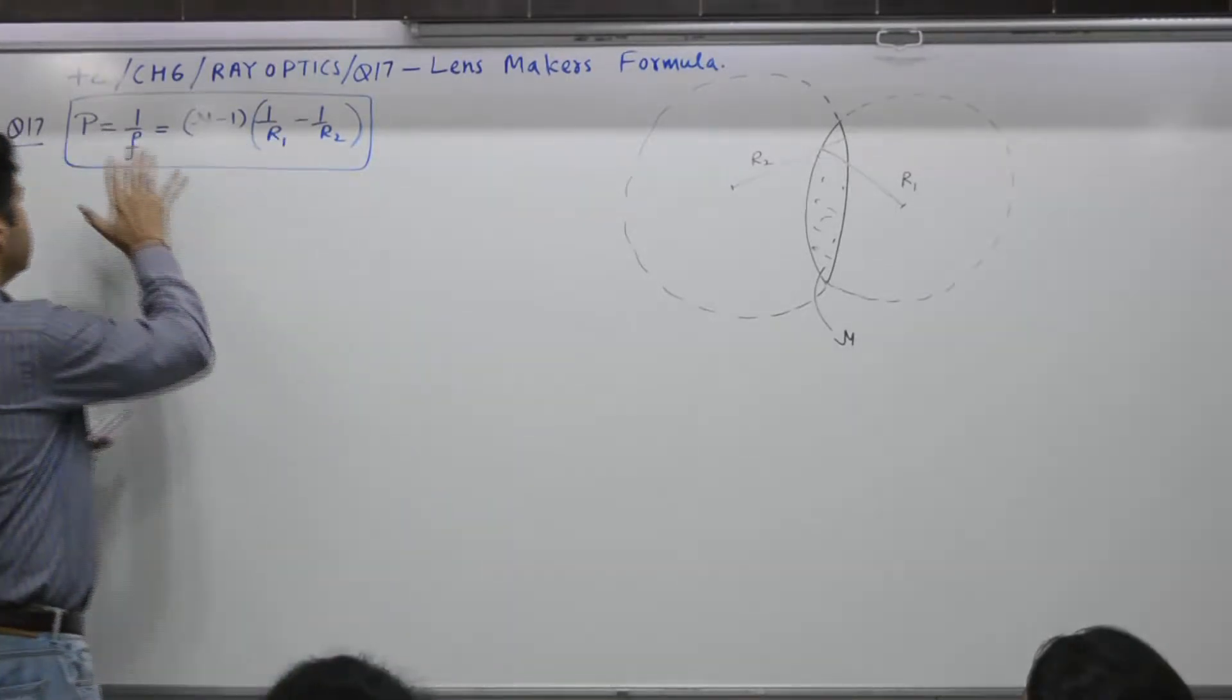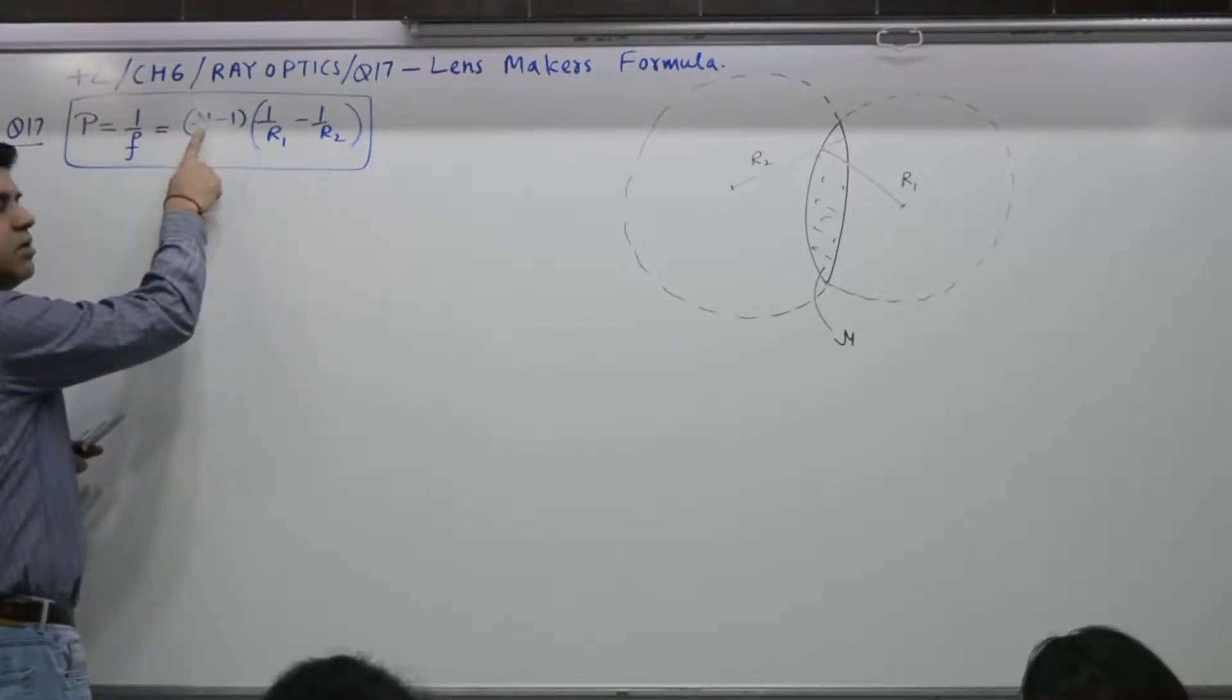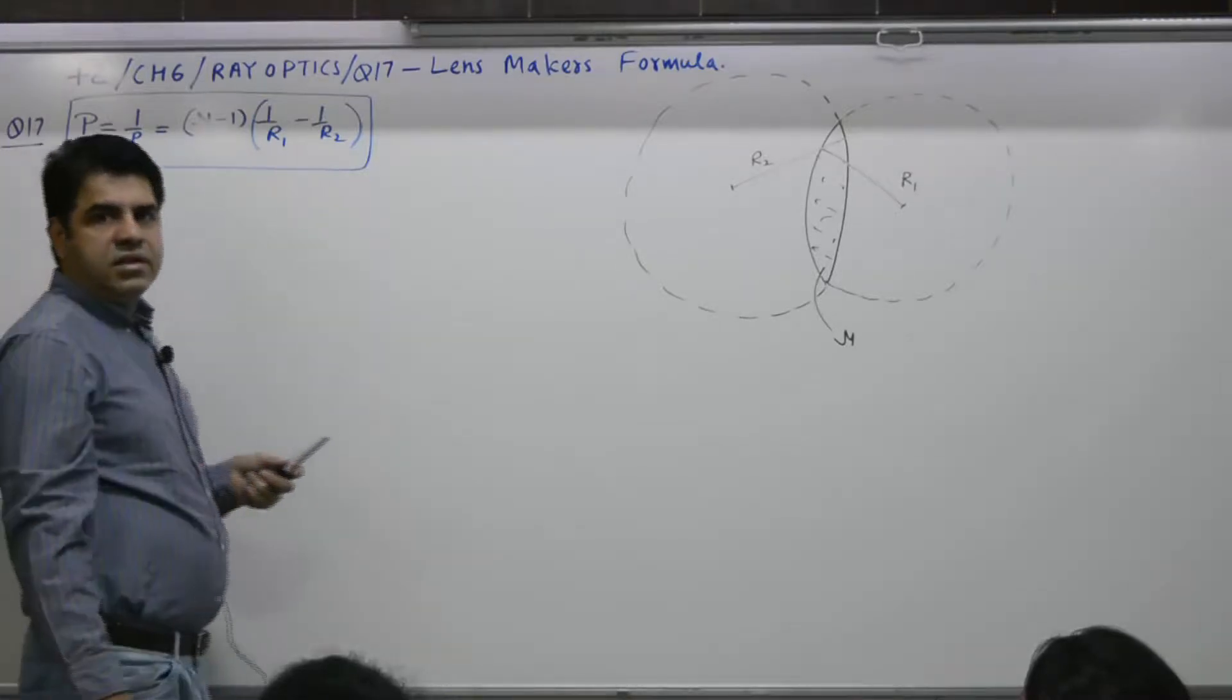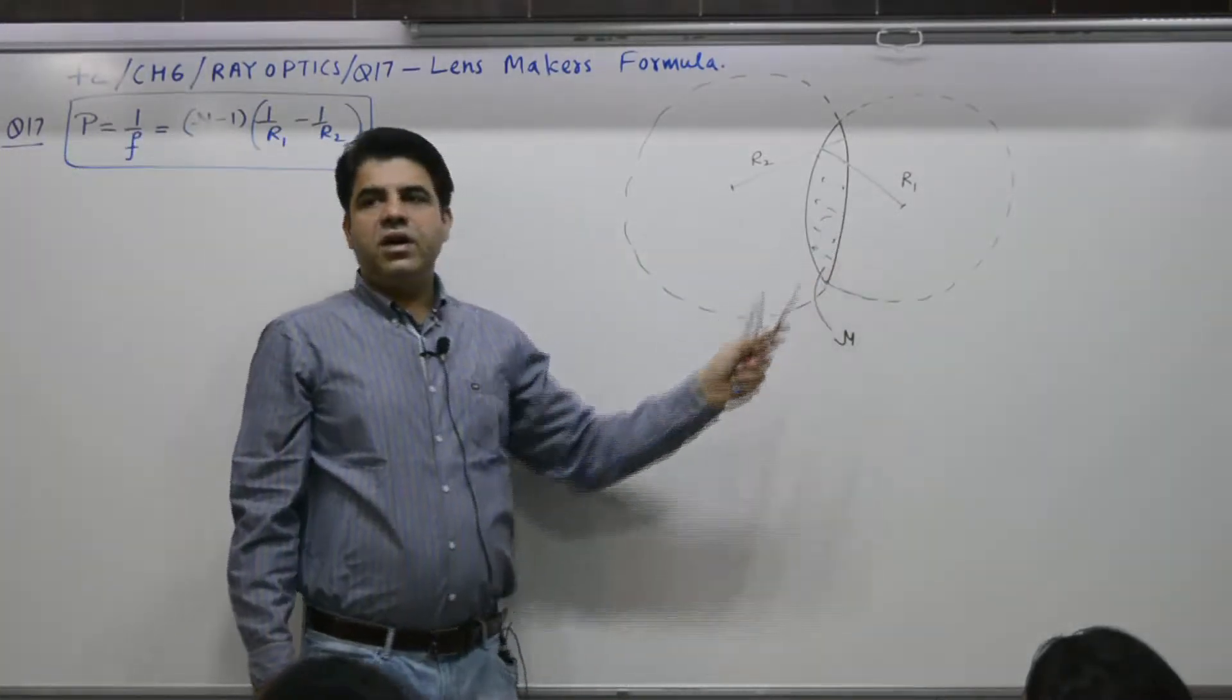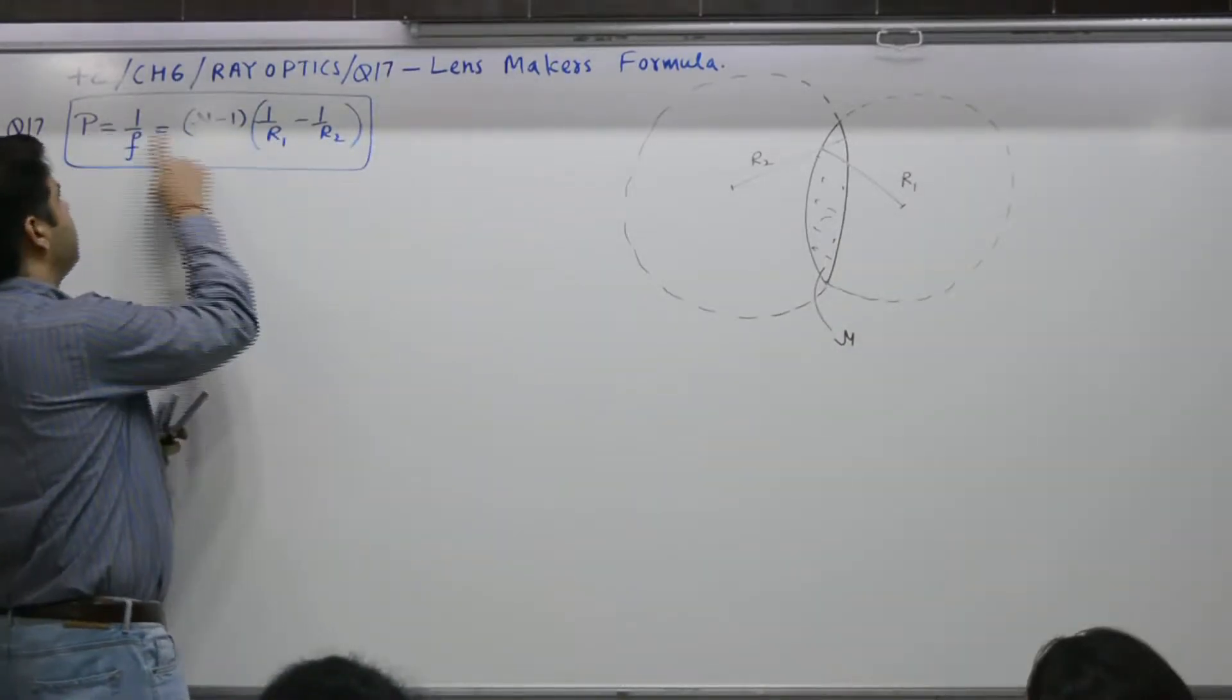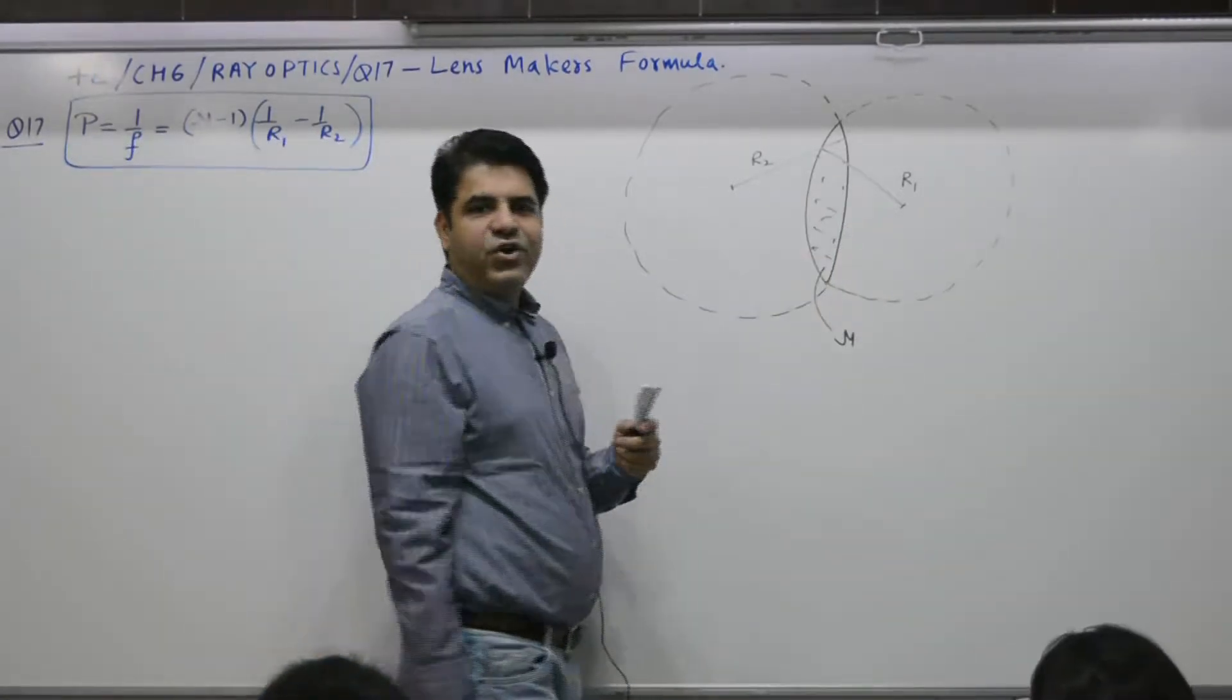Now, once power is clear, lens maker will first pick a material, 1.4, 1.5, 1.6. Then we decide values of R1 and R2. If R1 and R2 is less, power will be more and the lens will be thick lens. Good or not?